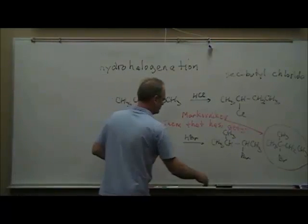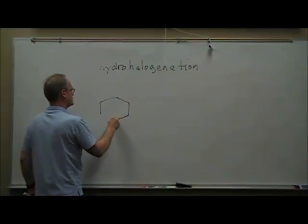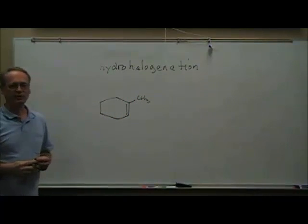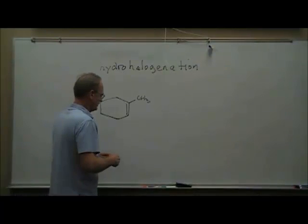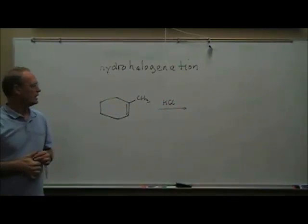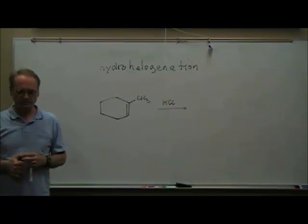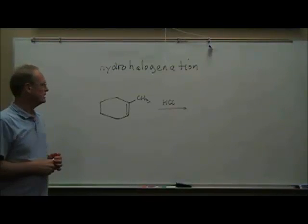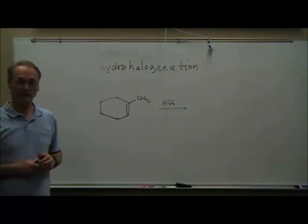Let's do another example — let's do a ring. What if we start with a cyclohexene that has a methyl group attached to the double bond on one of the two carbons but not the other, and we add HCl to that molecule? I'll give you a minute to figure out what the structure would be. You might want to pause the video right now, draw the structure of the product, then restart the video and we'll reveal the answer.